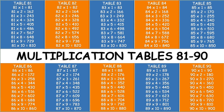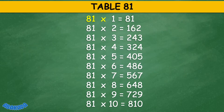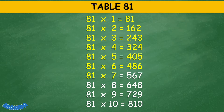Abacada Multiplication Tables 81 to 90. Table 81: 81 times 1 equals 81, 81 times 2 equals 162, 81 times 3 equals 243, 81 times 4 equals 324, 81 times 5 equals 405, 81 times 6 equals 486, 81 times 7 equals 567, 81 times 8 equals 648, 81 times 9 equals 729, 81 times 10 equals 810.